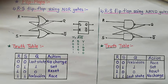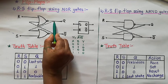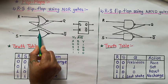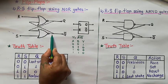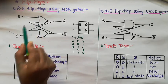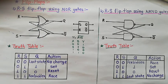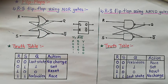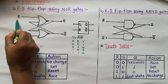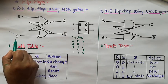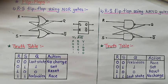What is cross coupling? The output of the first NOR gate is given as input to the second NOR gate, and the output of the second NOR gate is given as input to the first NOR gate. The upper NOR gate input is R, and the lower NOR gate input is S.